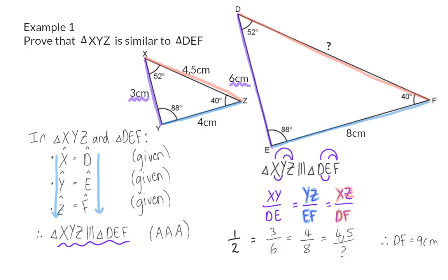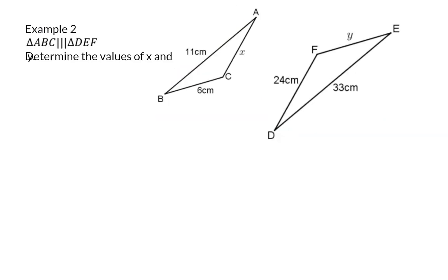So similar triangles makes it possible for you to determine unknown side lengths. Example 2. Triangle ABC is similar to triangle DEF. Determine the values of X and Y.